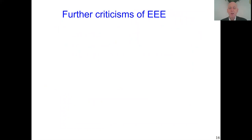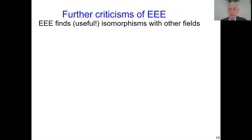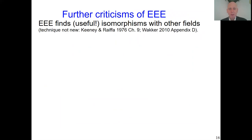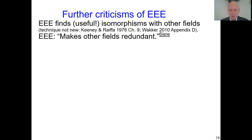Now I go to further questions. Something useful that Ergodic Economics does is show isomorphisms with other fields — meaning similar mathematical properties. This in itself is not new; many people have used such isomorphisms with temporal choice. But you cannot go on to claim that everything else should be forgotten and becomes redundant, as Ergodic Economics is suggesting.